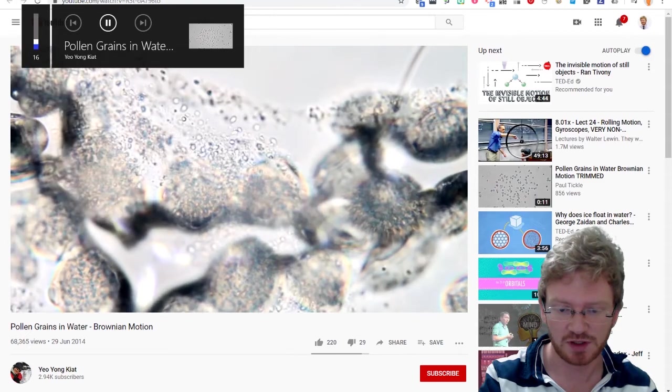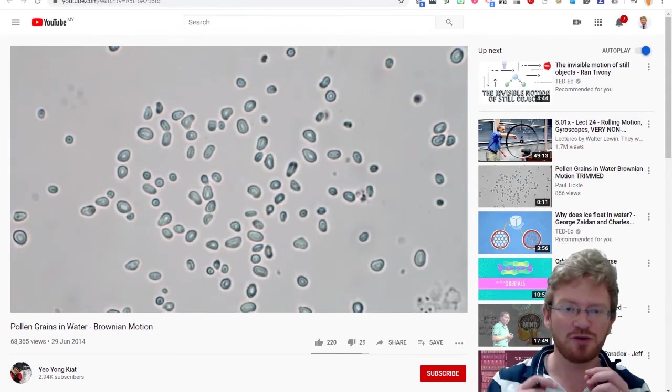So Brownian motion, it's one of those really interesting things that we've seen in several different parts of physics and chemistry and biology as well. Basically, if you look at very, very small things under a microscope, you see them appear to jiggle about. These are individual pollen grains under a microscope, and when you watch them, it appears that they jiggle randomly. If you watch one for a long period of time, it will kind of trace out a strange curved path and move around in unusual ways.